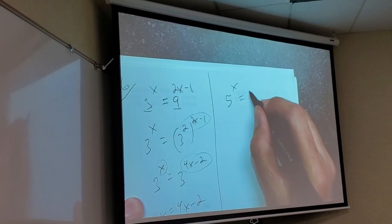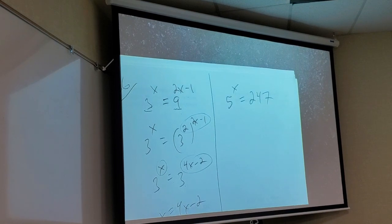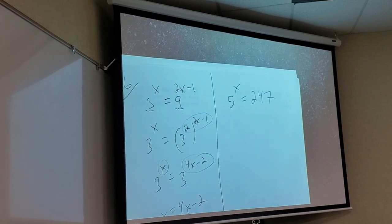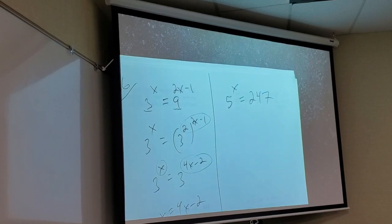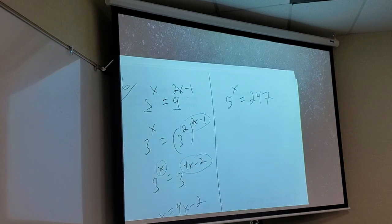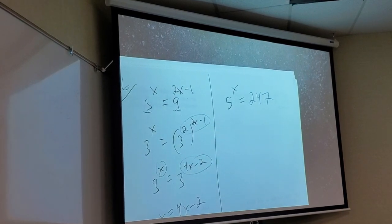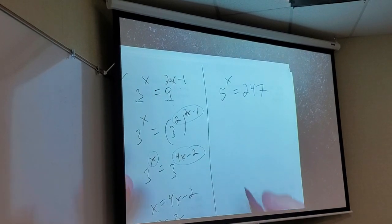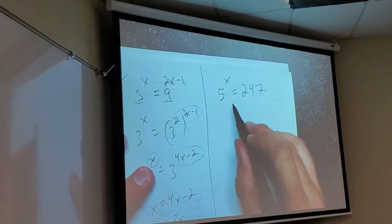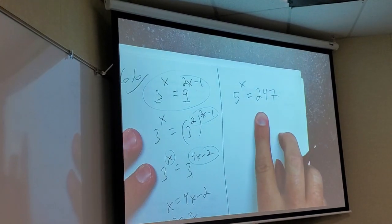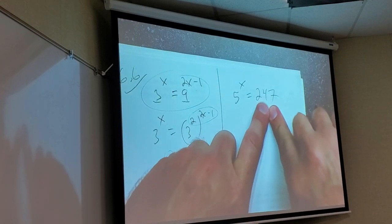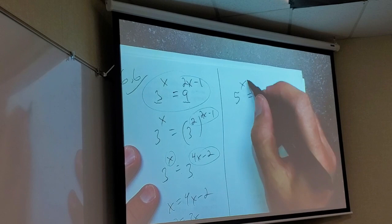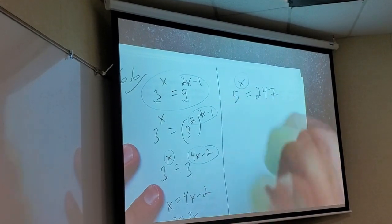And then we did do one problem where I couldn't do that. So let's do another one. What if I have 5 to the x equals 247? Do you know what 5 cubed is? 125. Can I do the same thing we did here for this one? Hell no. You'd have to know 5 to what power is 247. So what do we do then? What's the main problem with solving this equation is my variable is up here. So can't we take the log?